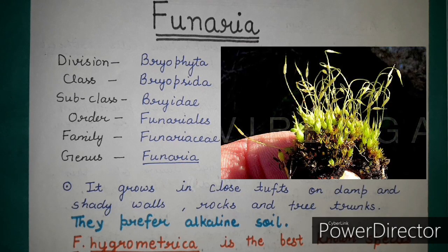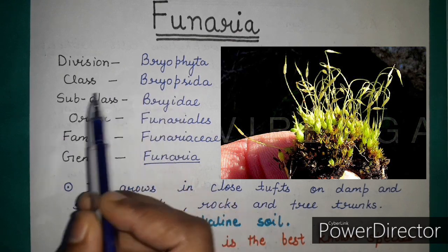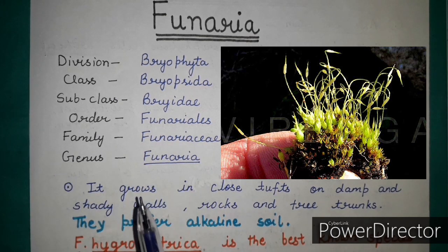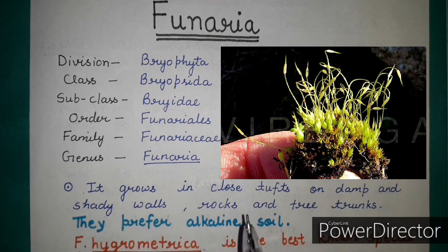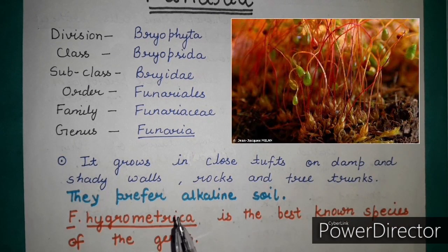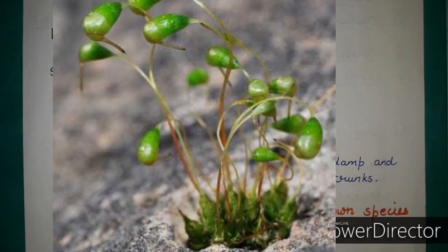Hello everyone, welcome to my channel all about biology. Today we will discuss about Funeria. Firstly, we will discuss about the systematic position of Funeria. It comes under division Bryophyta, class Bryopsida, subclass Brideae, order Funariales, family Funariaceae, genus Funeria. Funeria is basically a bryophyte that grows in close tufts on damp and shady walls, rocks, and tree trunks. It basically prefers alkaline soil and Funeria hygrometrica is the best known species of the genus.